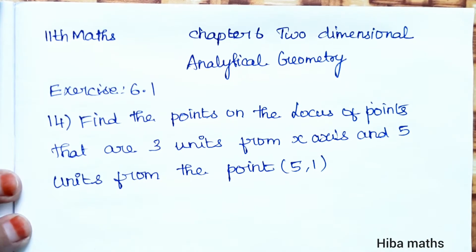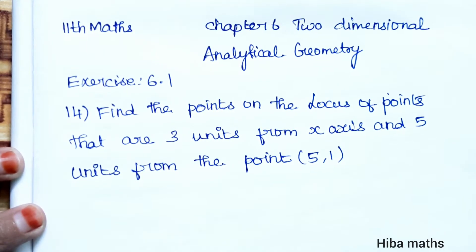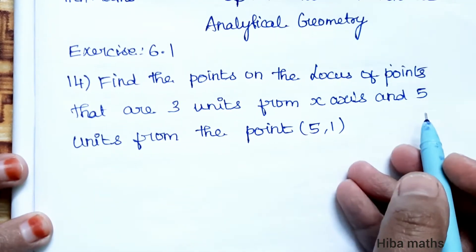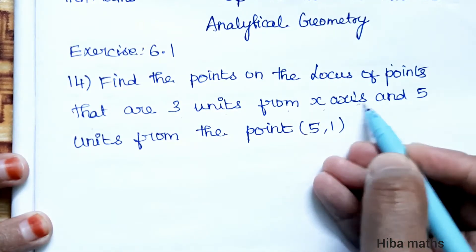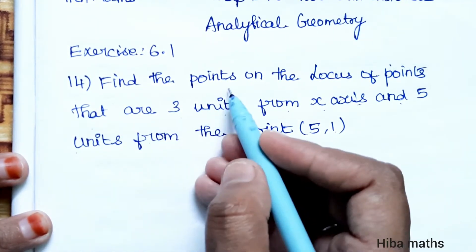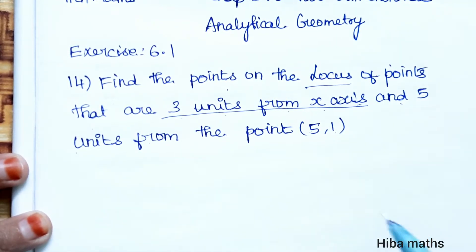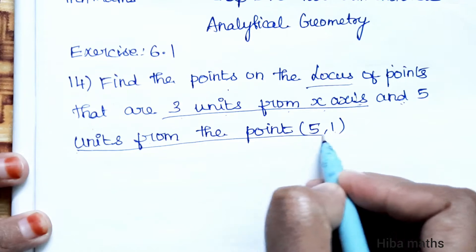Hello students, welcome to Hiva Max XI Standard, Chapter 6 - 2 Dimensional Analytical Geometry, Exercise 6.1, 14th question. Find the points on the locus of the points that are 3 units from the x-axis and 5 units from the point (5,1).